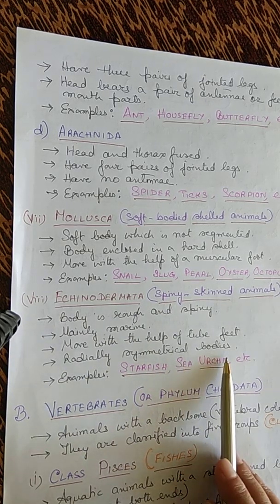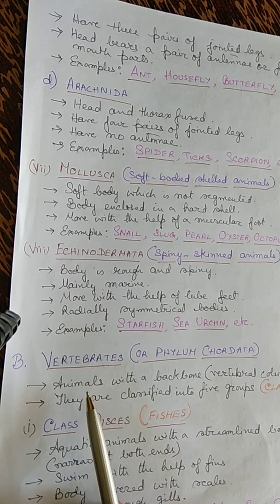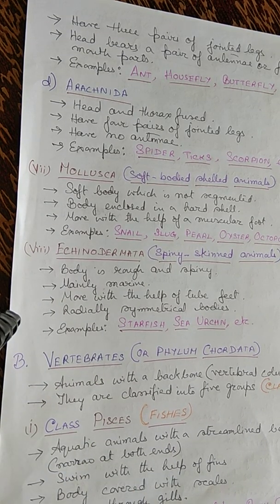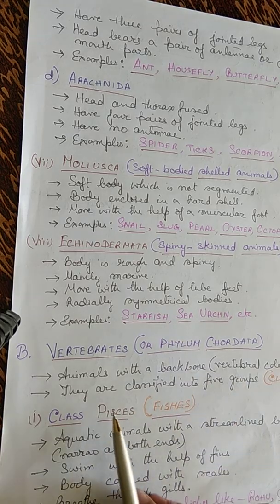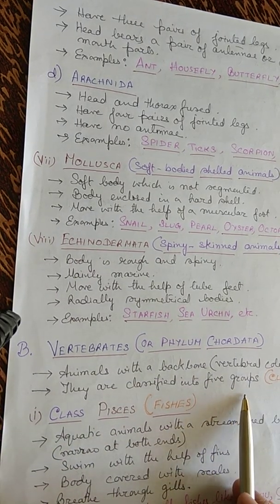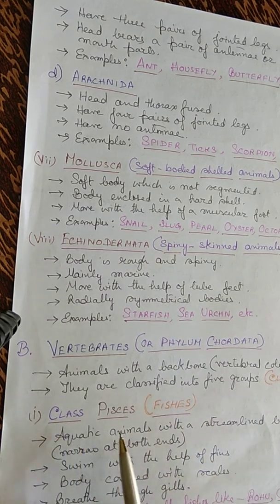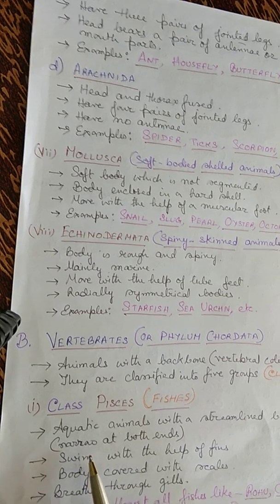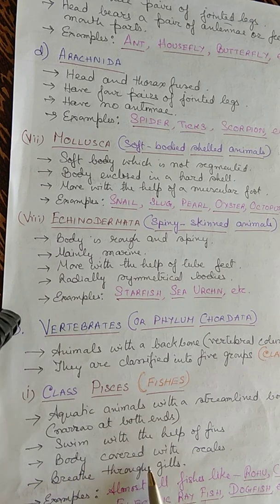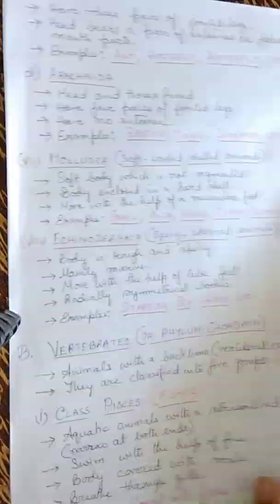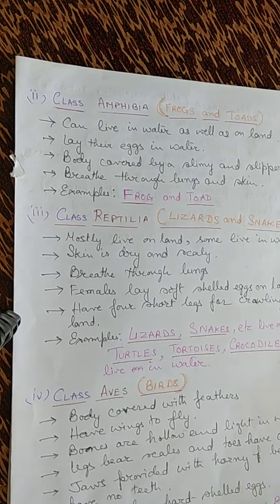Vertebrates, or phylum Chordata, have a backbone — a vertebral column. They are classified into five classes. The first class is Pisces (fishes): aquatic animals with a streamlined body, narrow at both ends. They swim with the help of fins, their body is covered with scales, and they breathe through gills. Examples include rohu, katla, mahasheer, electric ray, and dogfish.